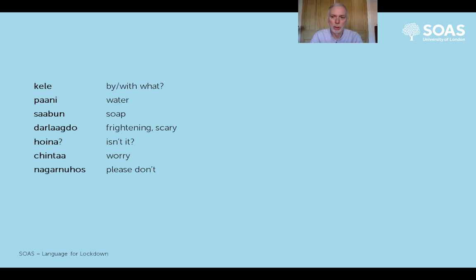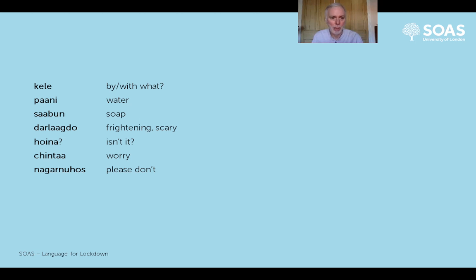'Nagarnos' - to ask someone to do something politely, you take the 'nu' ending, the dictionary form of the verb, and add 'hos' to it when talking to them at the 'tapai' level of address. If you want them not to do something, you prefix the whole thing with 'na' meaning 'don't' - so 'na garnu hos' means 'please don't do'. So 'jinta nagarnos' means 'please don't worry'.